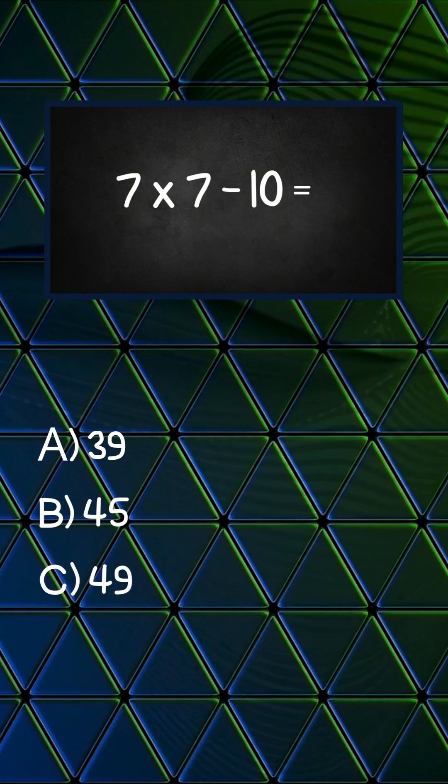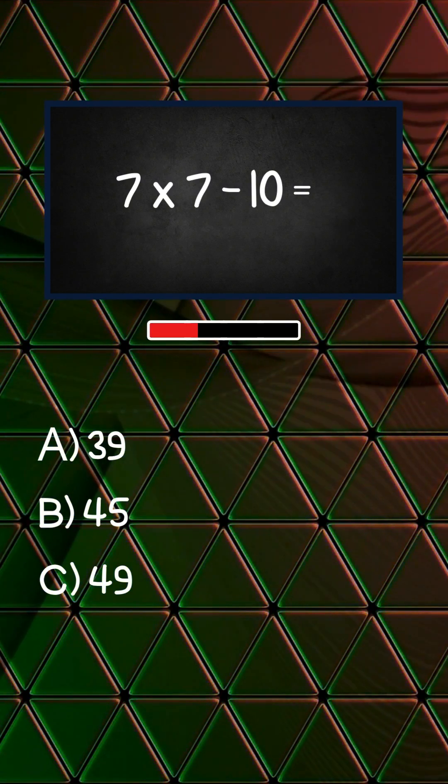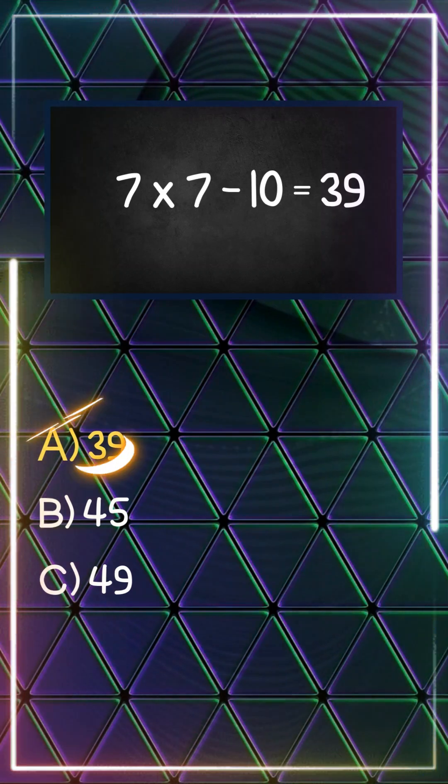7 times 7 minus 10 equals? Answer A, 39.